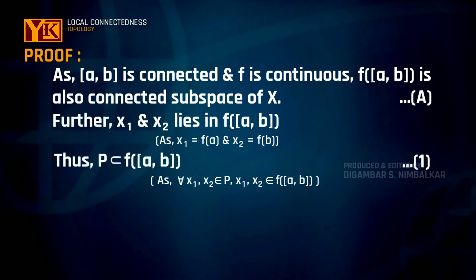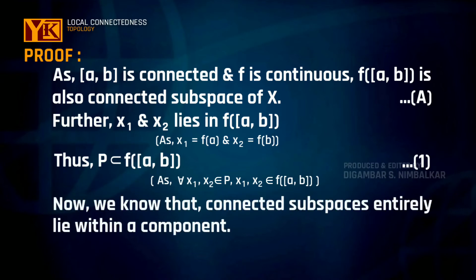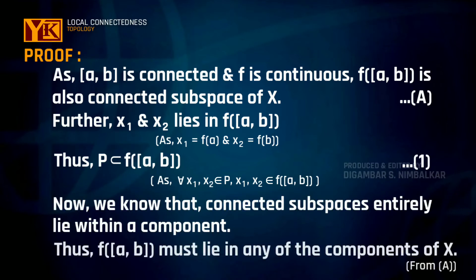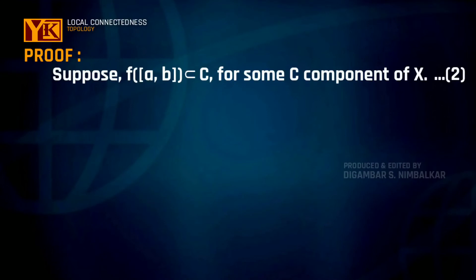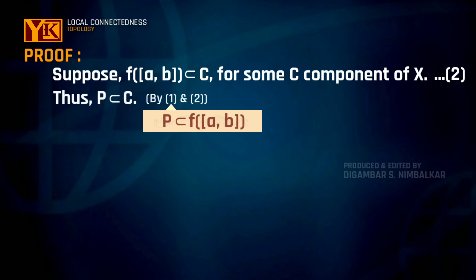So what does this mean? P belongs to f([a, b]), and we know that connected subspaces entirely lie within a component. So f([a, b]) must lie in one of the components of X. Suppose f([a, b]) lies in C, where C is some component. So what we get: P belongs to C, and that's what we wanted to prove.